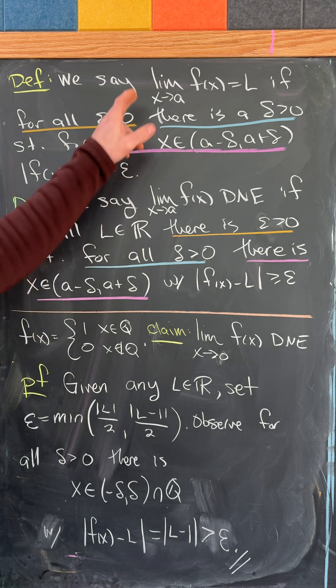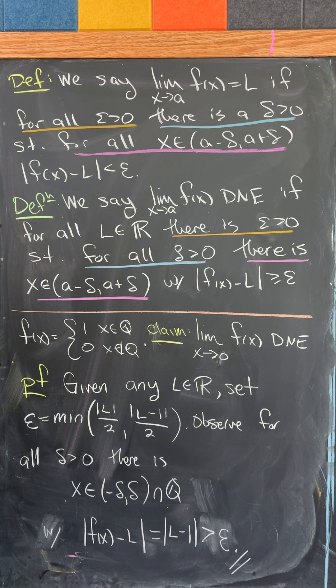So let's look at the definition that says that the limit as x goes to a of f of x equals l if for all epsilon bigger than 0 there is a delta bigger than 0 such that for all x on the interval a minus delta to a plus delta, f of x minus l in absolute value is less than epsilon.